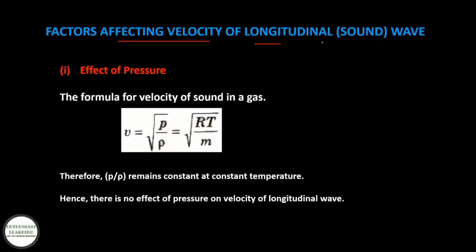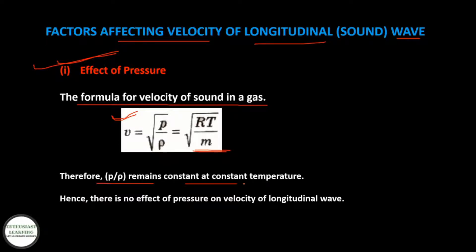Factors affecting velocity of longitudinal waves. First, effect of pressure: the formula for velocity of sound in a gas is V = √(γP/ρ). Since P/ρ = RT/M remains constant at constant temperature, there is no effect of pressure on the velocity of longitudinal waves.